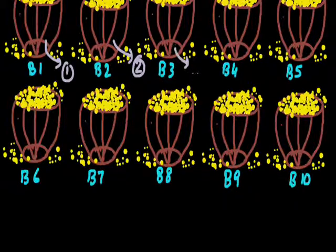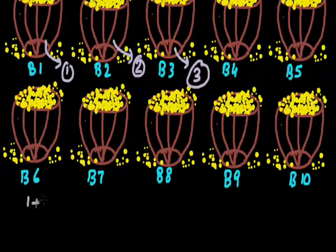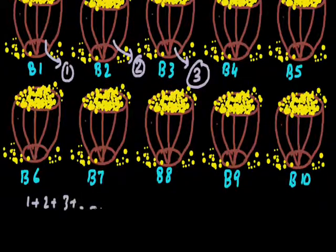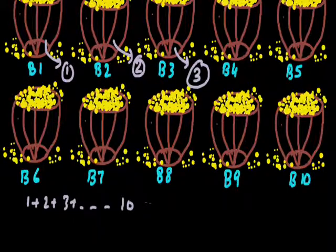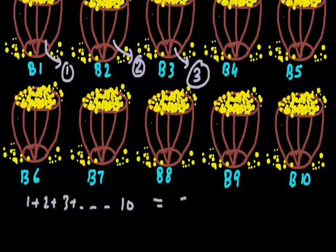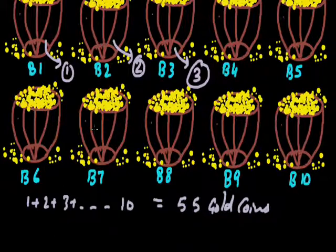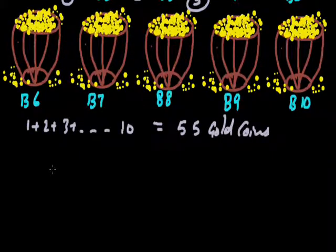In a similar way, out of the 3rd barrel I am going to take 3 gold coins and so on for each barrel. So in all I will be having 1 plus 2 plus 3 plus and so on up to 10 gold coins, which equals to 55 gold coins. I would like if you pause the video here and try the question after this. We have taken 55 gold coins.